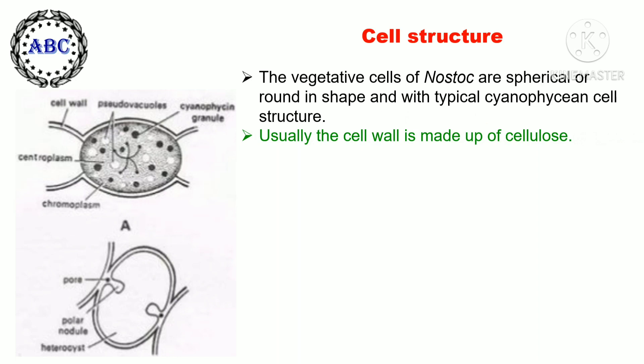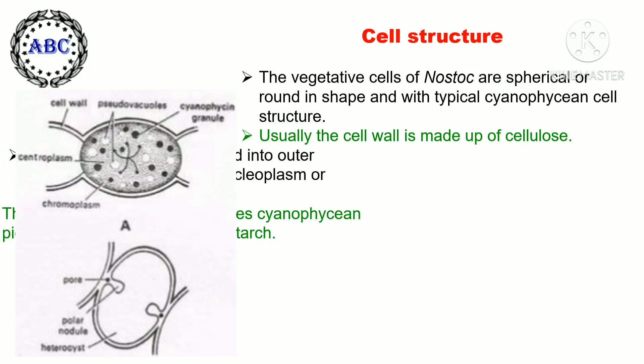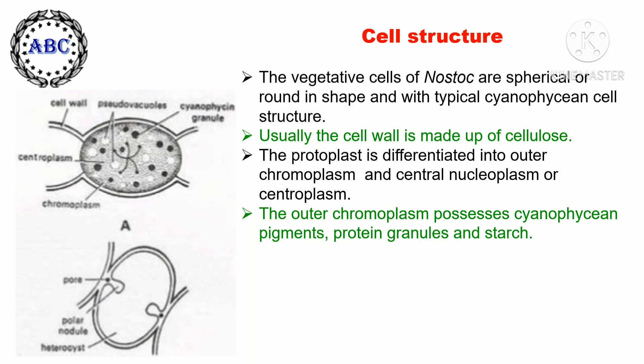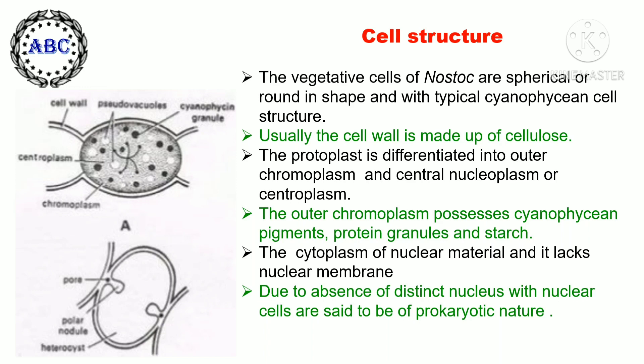The vegetative cells of Nostoc are spherical or round in shape with a typical cyanophycean, that is prokaryotic, cell structure. The cell wall is made up of cellulose. The protoplasm is differentiated into an outer chromoplasm and a central nucleoplasm or centroplasm. The outer chromoplasm possesses cyanophycean pigments, protein granules, and starch. The cytoplasm lacks a nuclear membrane, which is why Nostoc is classified as a prokaryotic cell due to the absence of a distinct nucleus.